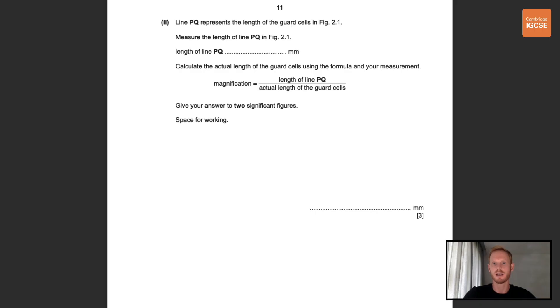Next question, line PQ represents the length of the guard cells in figure 2.1. Measure the length of line PQ in figure 2.1. So for this one you'll use a ruler and the answer is 31 millimeters plus or minus one millimeter each way. So you need to be pretty accurate but not absolutely perfect. You then need to calculate the actual length of the guard cells using your formula and your measurement and give your answer to two significant figures. So given that we've been asked to calculate actual length of the guard cells, which is on the bottom of the equation, we need to start by rearranging the equation. Actual length equals length of line PQ divided by magnification. You're going to get one mark for correctly measuring the line, which we've already done, one for correctly calculating the actual length of the guard cells, which is 31 divided by 1650, that's the magnification given in the diagram above, and one for rounding to two significant figures. So our final answer is 0.019 millimeters.